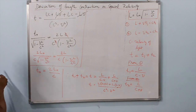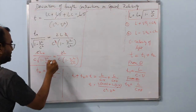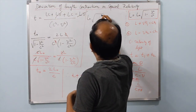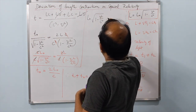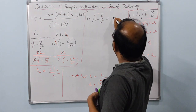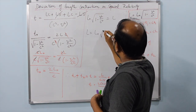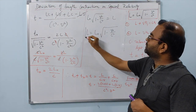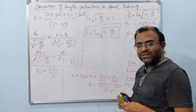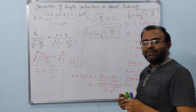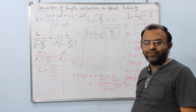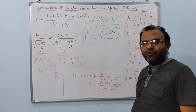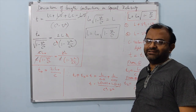Simplifying, we get L naught times (1 minus v squared over c squared) on one side and the contracted length L on the other, giving the final expression: L equals L naught times the square root of 1 minus v squared over c squared. This is the expected expression for length contraction, derived using a simple thought experiment. Please check out our video on length contraction in special relativity as well as the muon lifetime paradox in special relativity. Thank you.